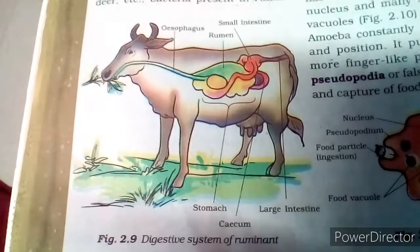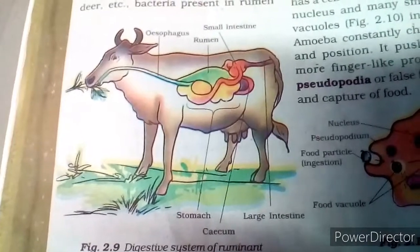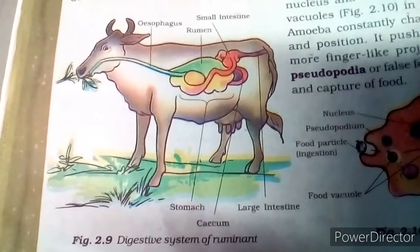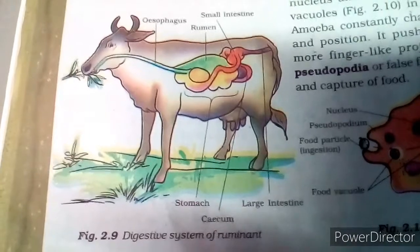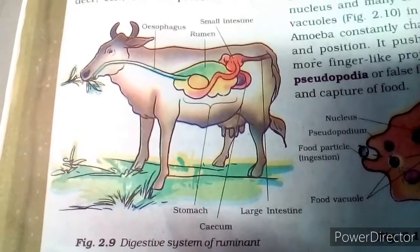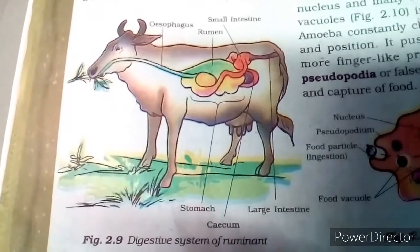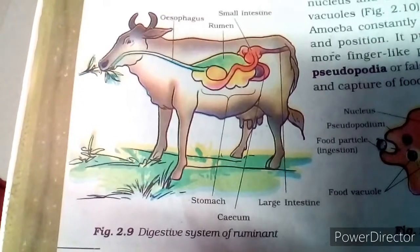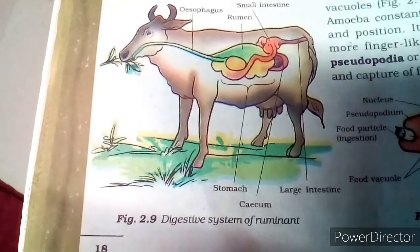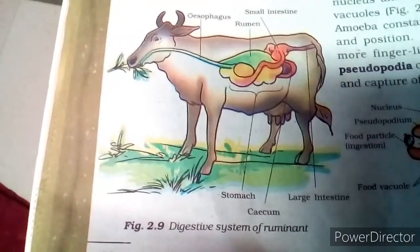Have you ever seen a cow or other grass-eating animals continuously chewing? They quickly swallow their food and store it in a part of their stomach called the rumen. The partially digested food is called cud. Later the cud returns to the mouth in small lumps and the animal chews it again. This process is called rumination and these animals are called ruminants.